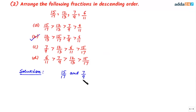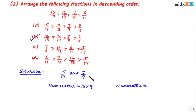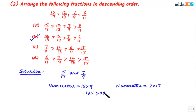Let's first take 15/17 and 7/9 and make their denominators the same. The numerator for 15/17 becomes 15 × 9 = 135, and for 7/9 it becomes 7 × 17 = 119. Since 135 is definitely greater than 119, that means 15/17 is greater than 7/9.